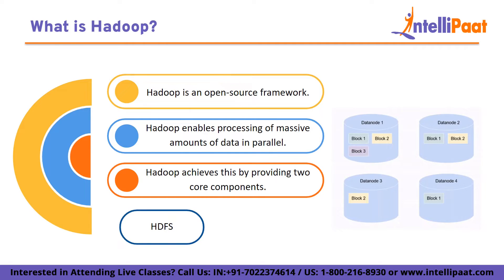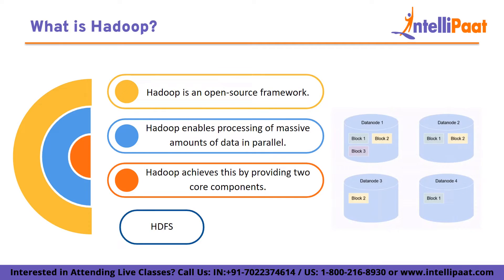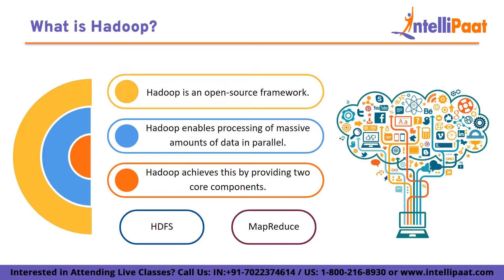HDFS is a distributed file system that can store and manage large data sets across multiple machines. It is designed to handle large files and supports replication to ensure fault tolerance. MapReduce is a programming model for processing large data sets across a cluster of machines in a parallel and distributed manner. Together, HDFS and MapReduce provide a powerful framework for handling big data, which has made Hadoop a popular choice for businesses and organizations dealing with large data sets.